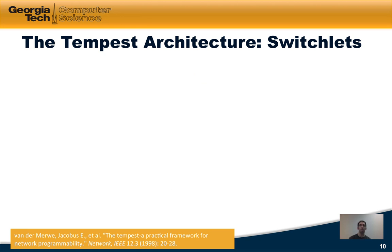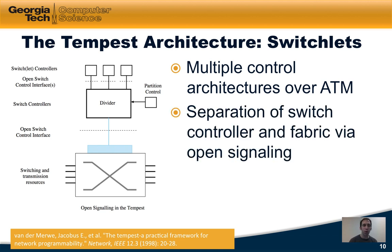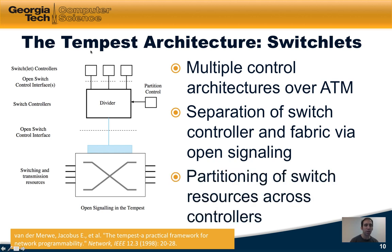Let's first look at switchlets, which came out of the Tempest architecture. In this architecture, we have a single underlying switch with its resources, and then an open switch control interface that exposes those resources to software sitting above — and that control interface does look a little bit like OpenFlow. The idea behind switchlets was to allow multiple control architectures to operate over a single ATM network. The open control interface separated the switch controller and the fabric via an open signaling protocol, and the divider partitioned the switch resources to allow multiple controllers each to have their own view of a logical switch. That looks a little bit like FlowVisor, something we will explore more when we talk about modern SDN architectures, in particular OpenFlow.